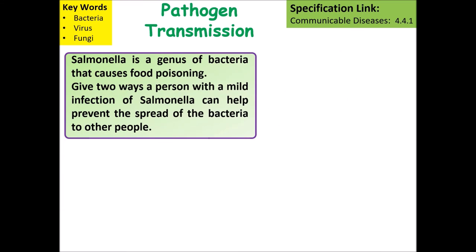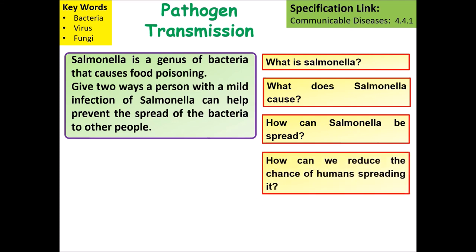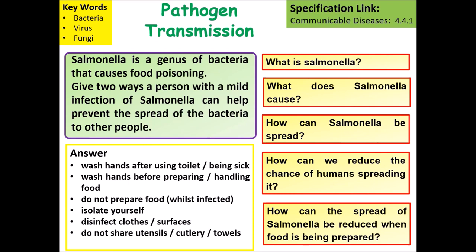The next question covers Salmonella, a genus of bacteria that causes food poisoning. Think about what Salmonella is, what it causes, and how it can be spread. Preventative measures include washing hands after using the toilet, washing hands before preparing food, not preparing food if infected, isolating yourself if infected, disinfecting clothes and surfaces, and not sharing utensils or towels with an infected person.